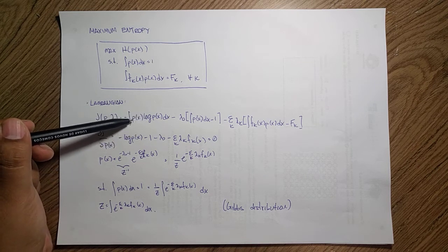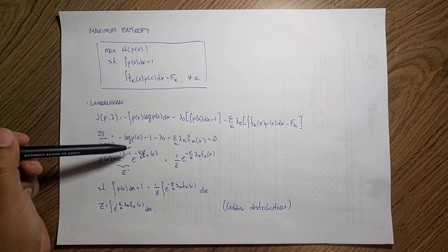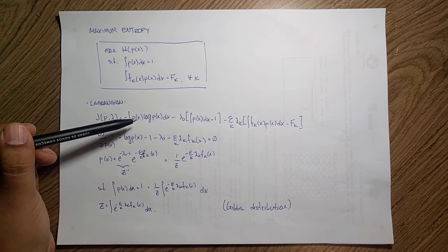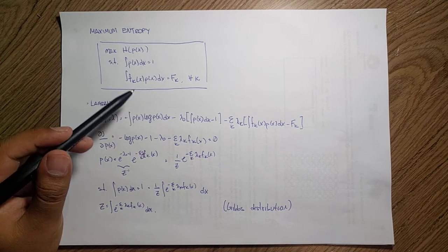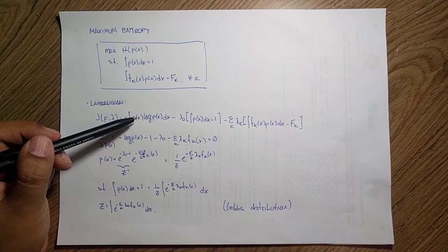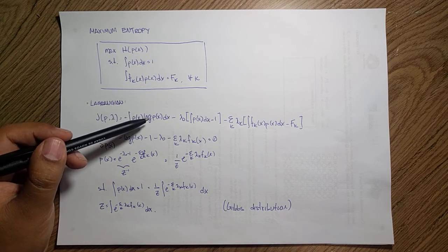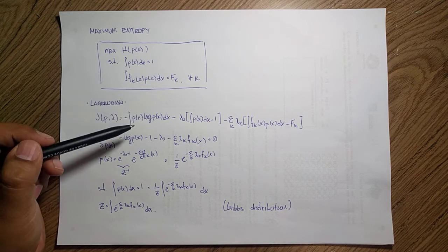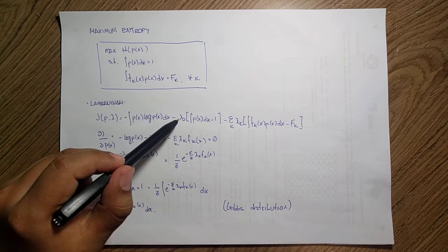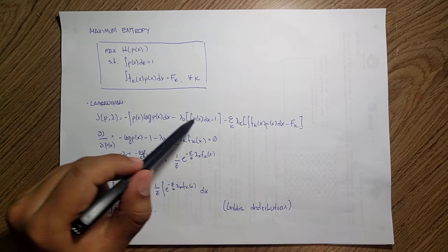That is just the derivative of p(x) times log of p(x), so it is one times this plus the derivative. p(x) times the derivative of log p(x), so that is p(x) over p(x), that is one, minus the lambda. The derivative of p(x) is one.